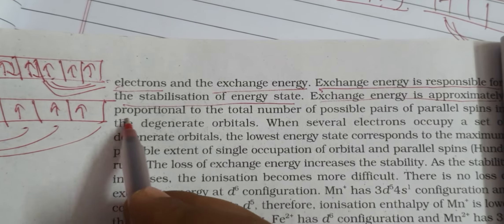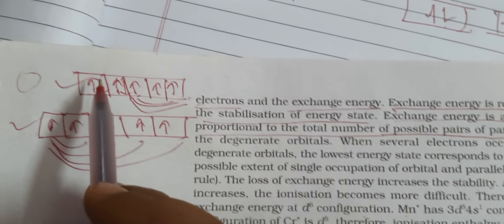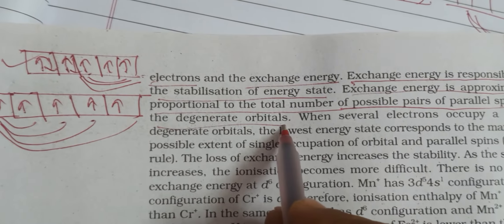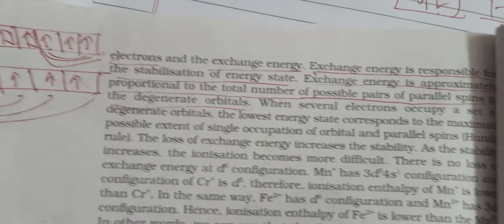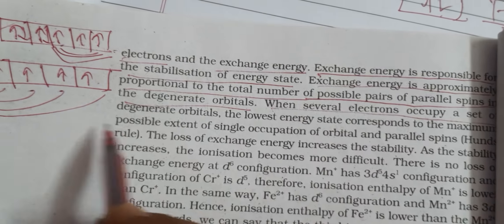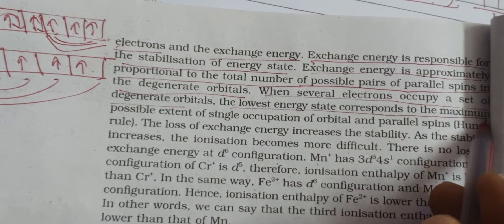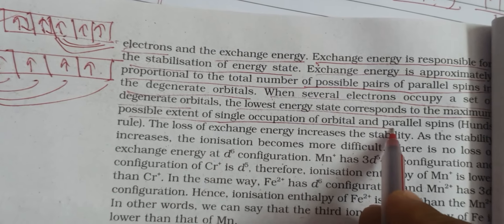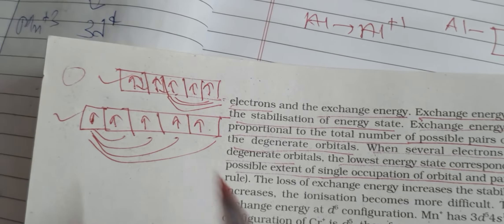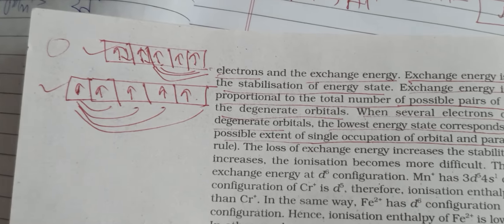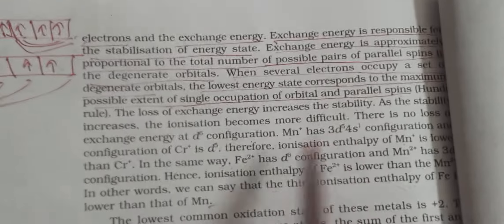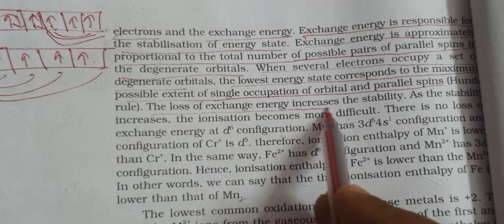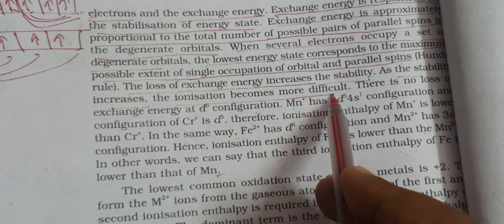Exchange energy is approximately proportional to the total number of possible pairs of parallel spins in the degenerate orbitals — same energy orbitals. All d orbitals are same energy orbitals, so they are degenerate. When several electrons occupy a set of degenerate orbitals, the lowest energy state corresponds to maximum single occupation of orbitals with parallel spins. The loss of exchange energy increases stability, and as stability increases, ionization becomes more difficult.